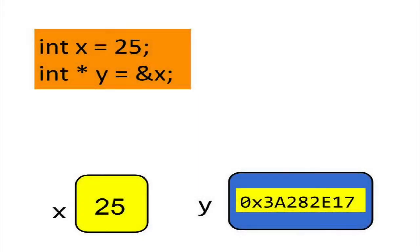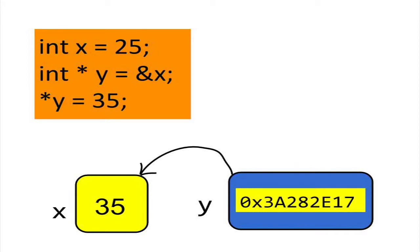Not only can you get the contents of a variable indirectly with pointers, you can also change the contents. Here is an example. Suppose we want to store the number 35 in x, instead of 25. We can reset the variable x using pointer y. Now variable x contains the number 35.